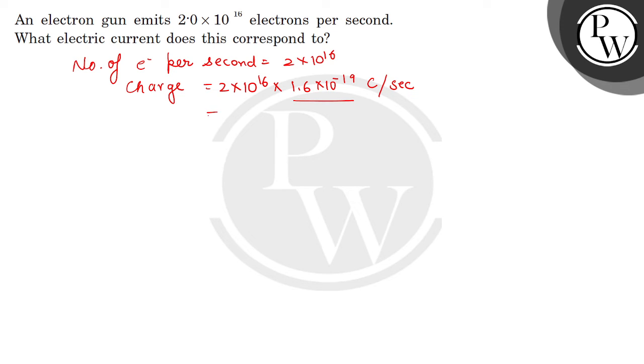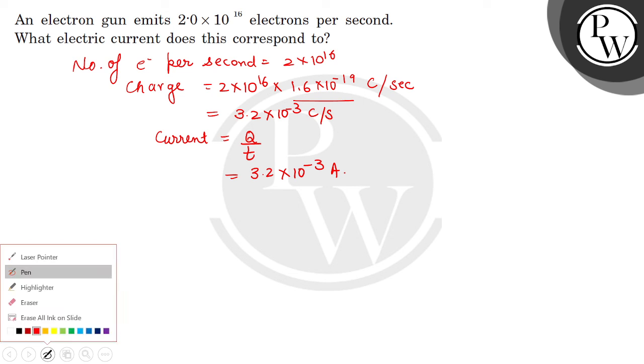Now we calculate this and this becomes 3.2 into 10 to power minus 3 coulombs per second. Now current is Q by t, where t is 1 as it is per second, so we can find current as 3.2 into 10 to power minus 3 ampere. So it is our answer.